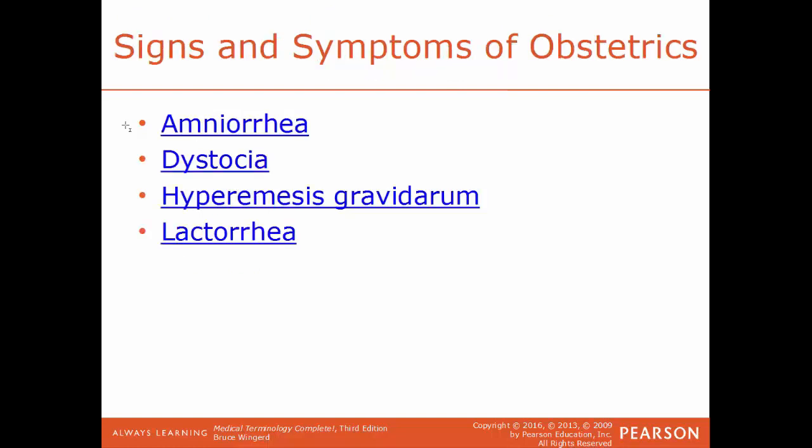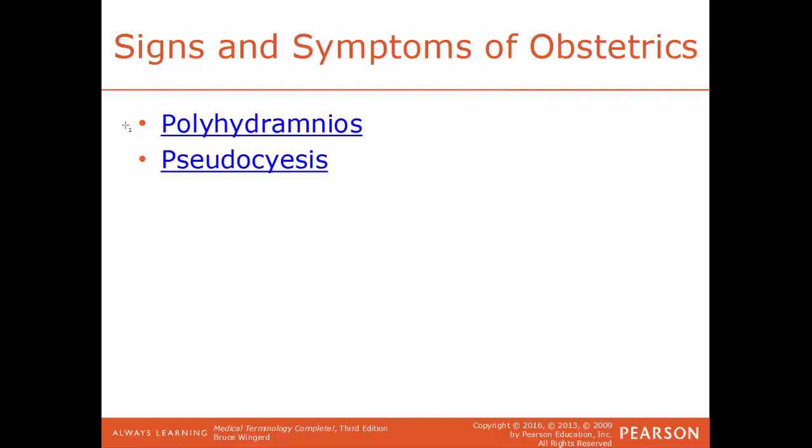Now we'll talk about some signs and symptoms of obstetrics. Amniorrhea is a flow or discharge of the amniotic fluid from the amniotic sac. Dystocia is having a difficult birth — this can be caused by an awkwardly positioned fetus, having a small pelvis, a failure of the uterus to contract normally, or the cervix to dilate normally. Hyperemesis gravidarum is the technical name for morning sickness — severe nausea and vomiting while pregnant, vomiting several times a day. Some women have it for a few weeks, some the entire pregnancy. Lactorhea is the spontaneous and excessive amount of milk production from the breast, regardless of whether you are nursing or not. Polyhydramnios is an excessive buildup of amniotic fluid around the fetus. Pseudocyesis is the technical term for a false pregnancy.